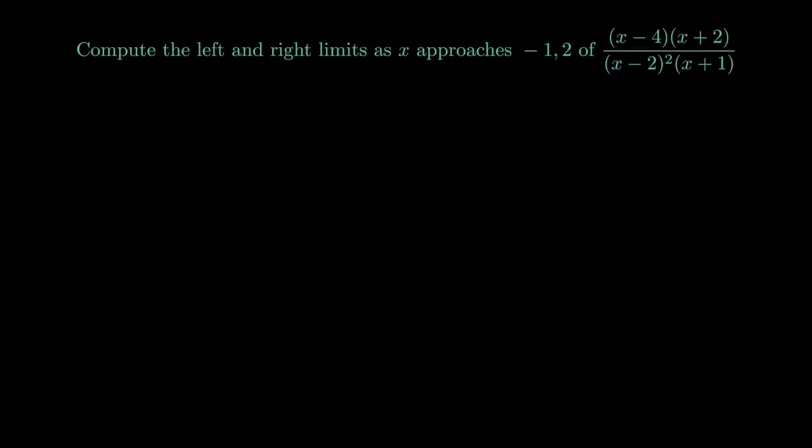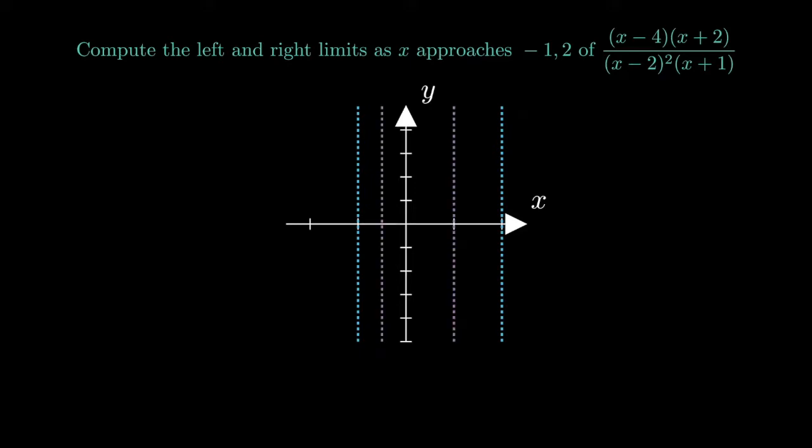We are asked to describe the left and right limits of this expression at its vertical asymptotes. We divide the domain into regions where the function could change signs, at the roots of the numerator and denominator.